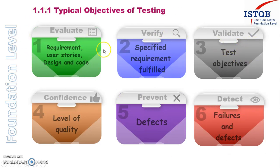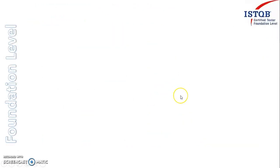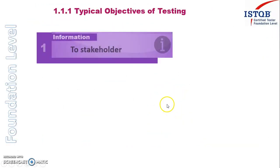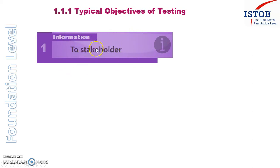Apart from these main objectives, there are three more objectives. The first is providing information to stakeholders — such as how many test cases we have covered, how many are still pending, and whether any major issues are open. By getting this information, the customer will be able to plan future activities, which is why this information is very important.